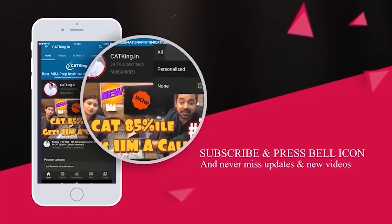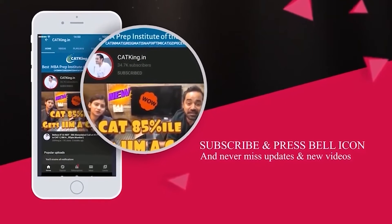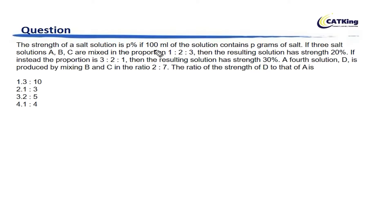After solving the question, click on the bell icon and the notification will come to you in the mailbox. Let's start the question. The strength of a salt solution is P percent if 100 ml of the solution contains P grams of the salt. Now there are three salt solutions A, B and C. Let's say the concentrations are small a, small b and small c.